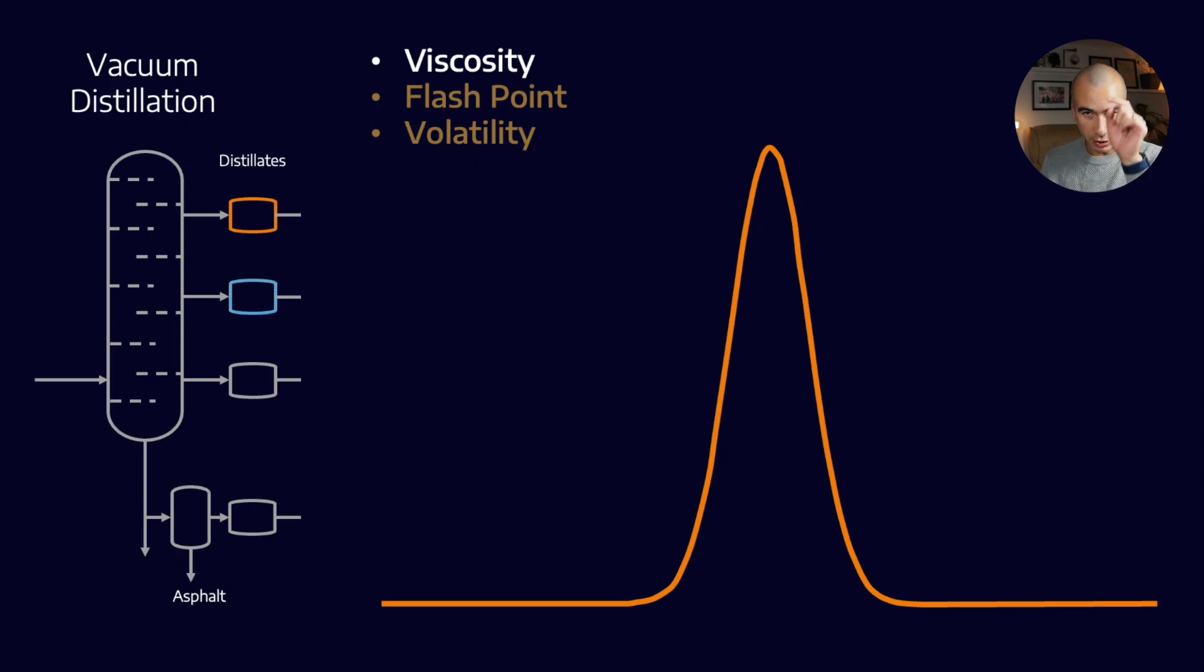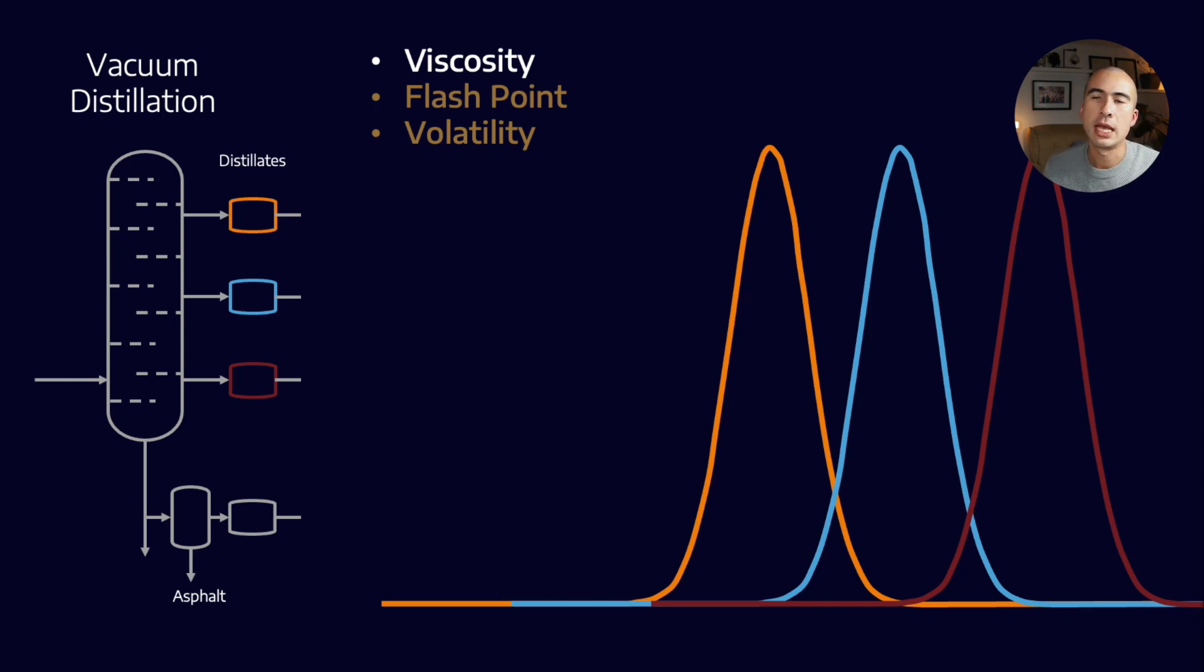But the next cut down is obviously a larger molecule, so that makes it heavier and with a higher boiling point. And of course, if we go heavier still, then we get another point. Now, flashpoint and volatility are more related to the breadth of that distribution.